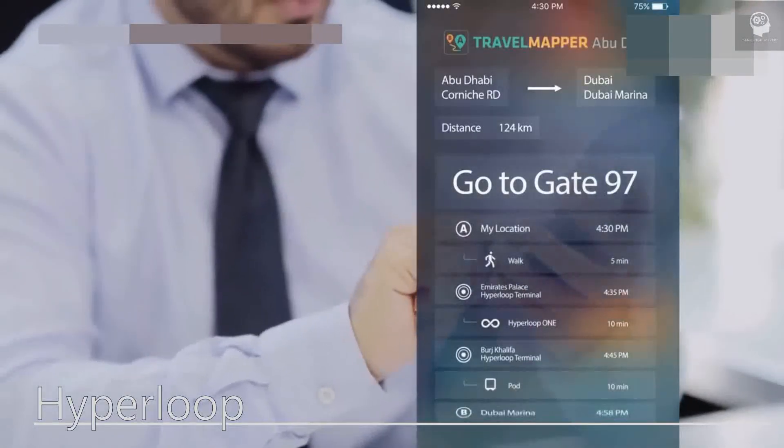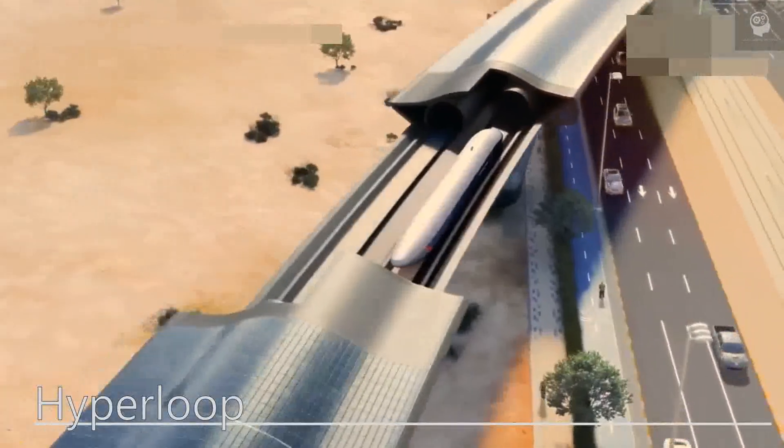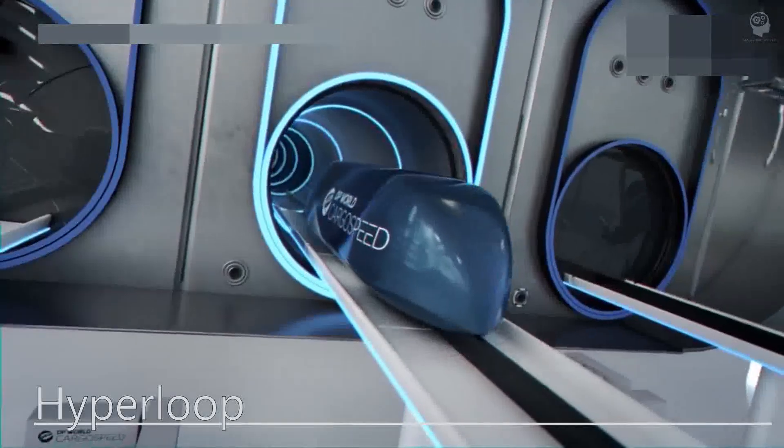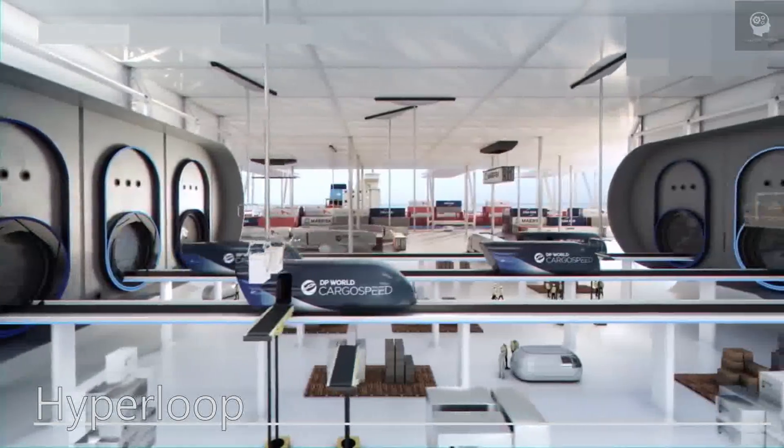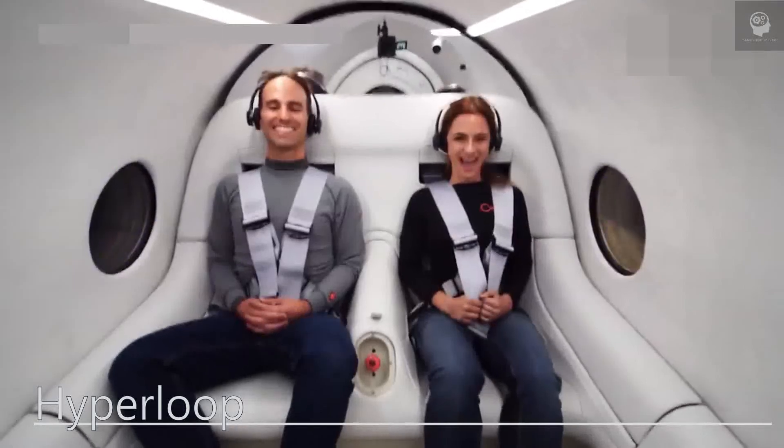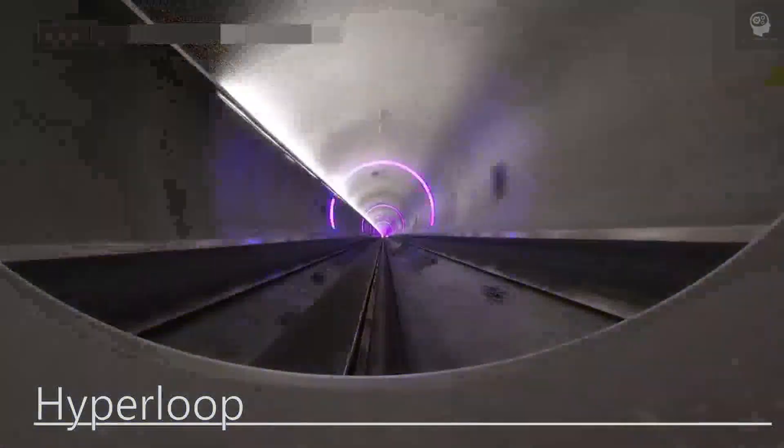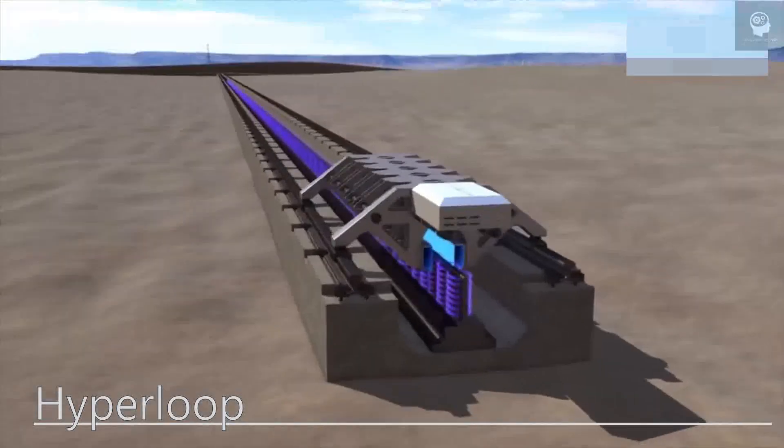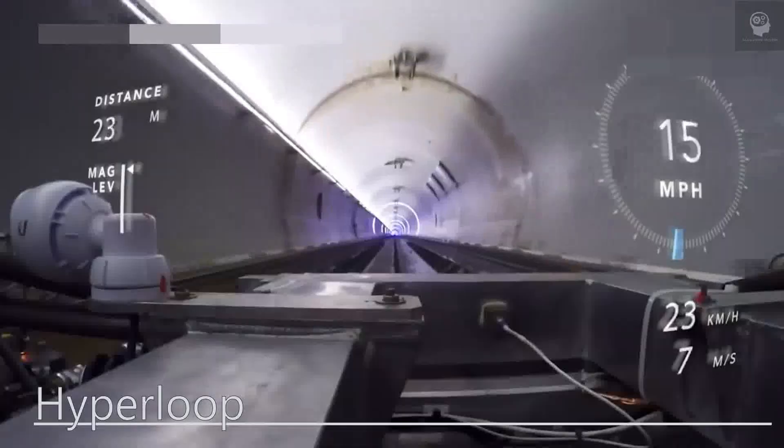Reduced congestion and pollution with hyperloop technology could allow people to travel faster and more efficiently, reducing traffic congestion and air pollution caused by cars and airplanes. For example, a hyperloop system between Paris and Brussels could reduce CO2 emissions by up to 87% compared to current transportation options.